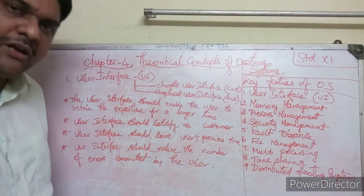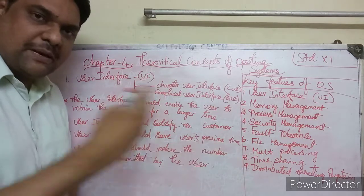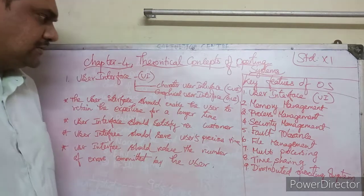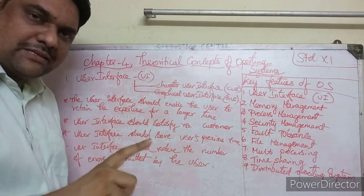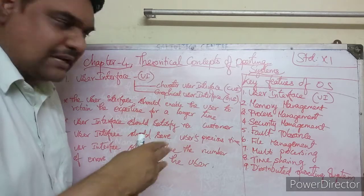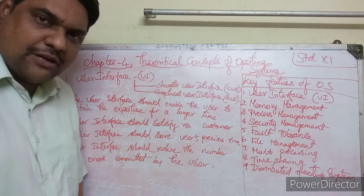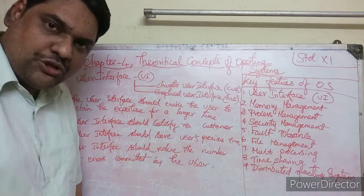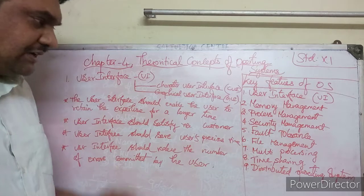You have to type through your keyboard — that is the Character User Interface. It is a black screen with no color and no mouse, only keyboard interaction. That kind of interface we now call the Character User Interface (CUI). Next is the Graphical User Interface, or GUI for short.